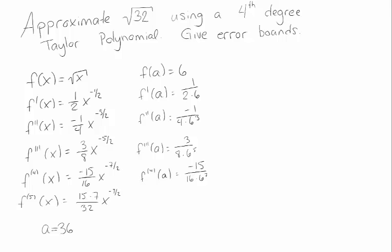So the first thing we're supposed to do is approximate it. So let's figure out what our Taylor polynomial is going to look like. Well, it's f(a) plus f prime of a times (x minus a), that's (32 minus 36) to the first power, so that's the number one term.